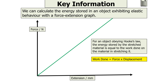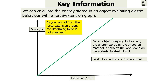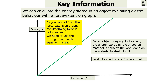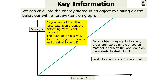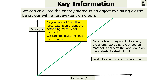Work done is equal to the force times by the displacement. Now, as you can tell from the force extension graph, the deformant force is not constant — it is actually increasing. So we need to use the average force in this equation instead. The average force is half F, because our starting force is zero and our final force is F on a constant straight line, so the average from zero to F is going to be a half.